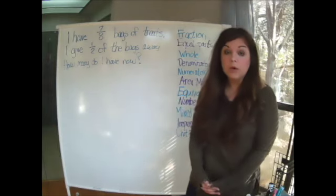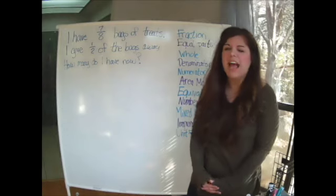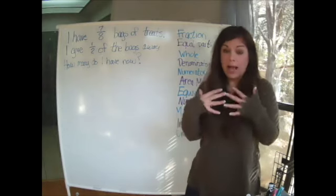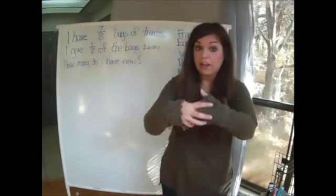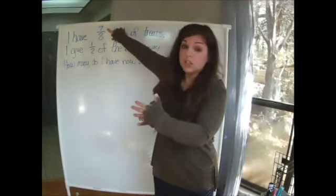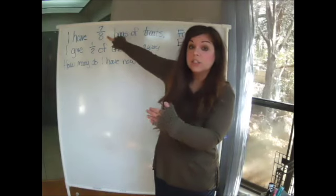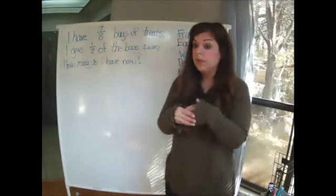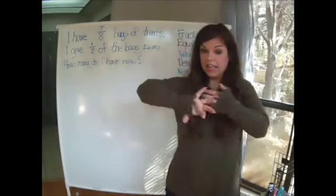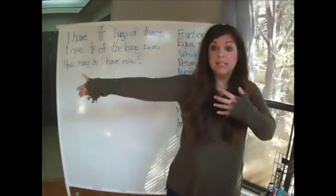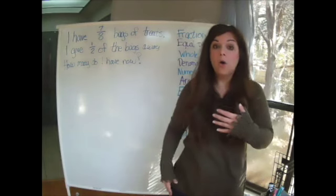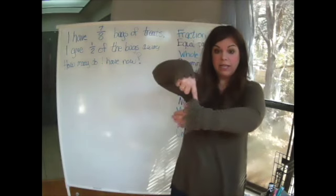So remember when we're doing our word problems, we have to visualize. So I'm imagining that I have almost a whole bag full of dog treats because seven is close to eight. So that tells me that it's almost one whole. Then I'm imagining separating them and I am giving half of them away. And I'm asking how many do I have now?